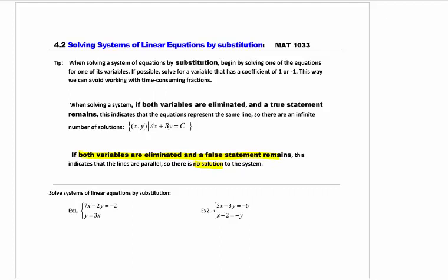If when you solve it both variables cancel out and it's a true statement, then we have infinite solutions. And that's where we write it as the actual ordered pair and list an actual equation. Both of those are my special cases.